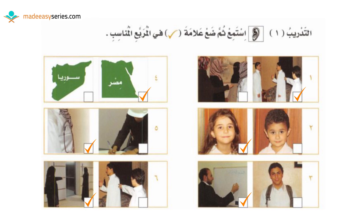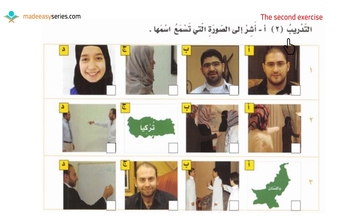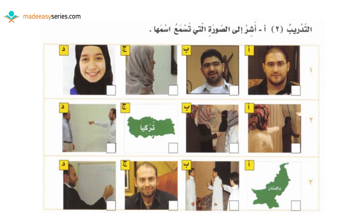Now let's go to the next exercise, التدريب الثاني, the second exercise. It says أشر إلى الصورة التي تسمع اسمها — point to the picture whose name you hear. Please note that this instruction is not quite correct; we're not asked to point, we're asked to put a tick on the boxes. So we should follow the previous instruction. In front of us there are three questions, each with four possible answers, and only one of the four is correct. Before the audio, let me go over the words in the pictures.